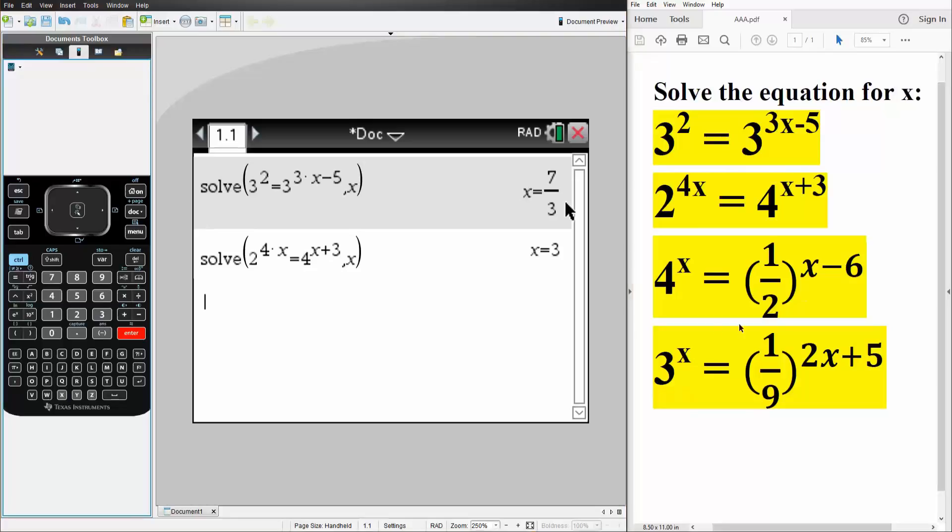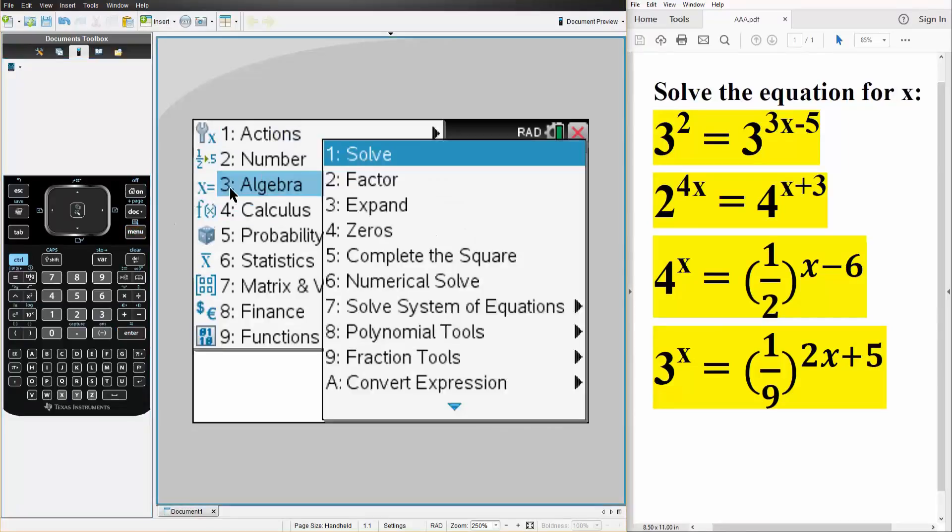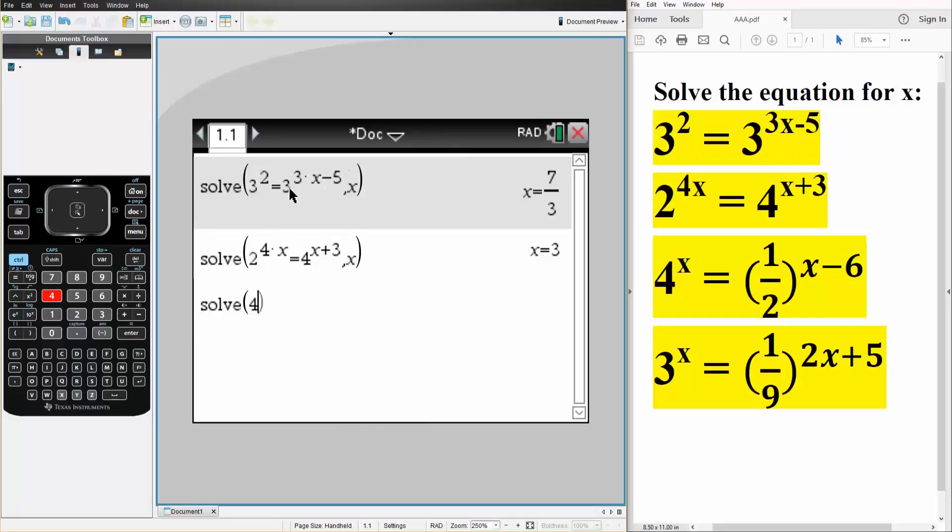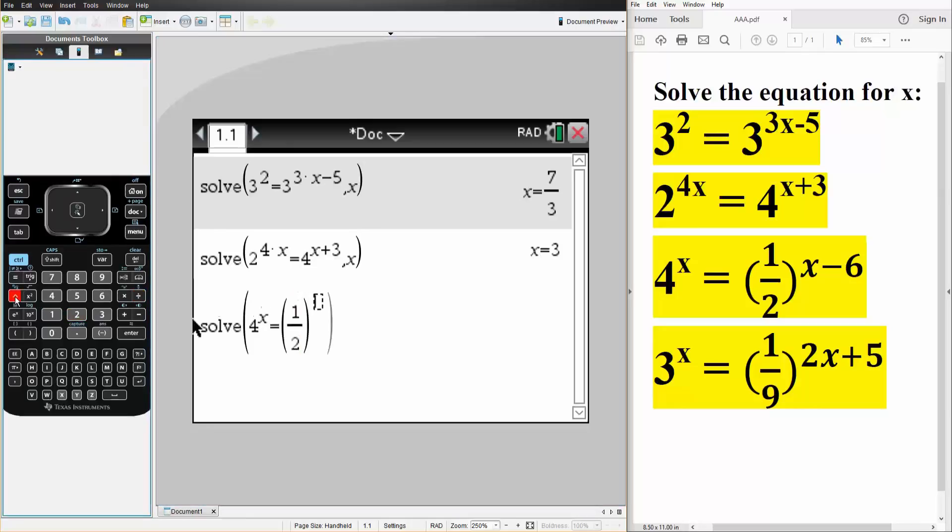And now for the last two problems. Exact same thing, menu, algebra, solve. We have 4 raised to x is equal to, control division, 1 half raised to x minus 6 like this. We're solving for x, so comma x, hit enter, and x is equal to 2.